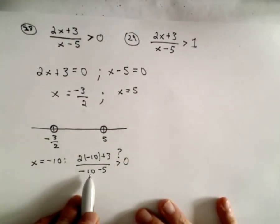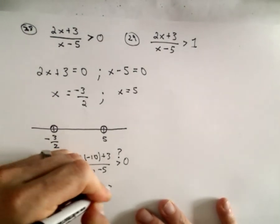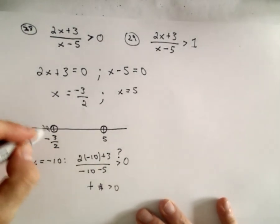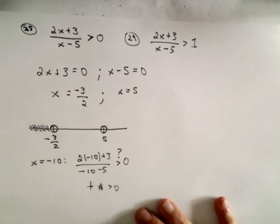Well, we're going to get a negative on the top and a negative on the bottom. A negative over a negative is going to be a positive number. So that's certainly greater than 0. So anything less than negative 3 halves is going to work.